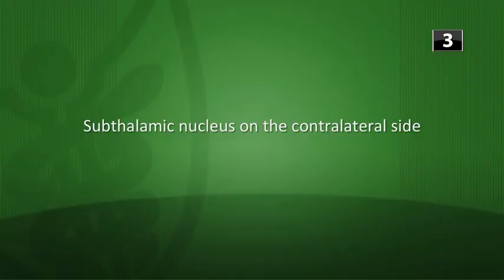Next question: a male patient presents with involuntary flailing of one arm — where is the lesion? This is hemiballismus, which is caused by a lesion of the subthalamic nucleus on the contralateral side.